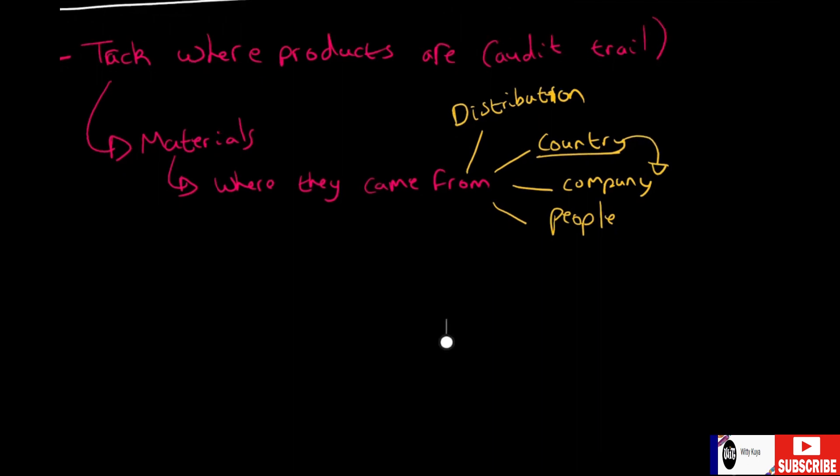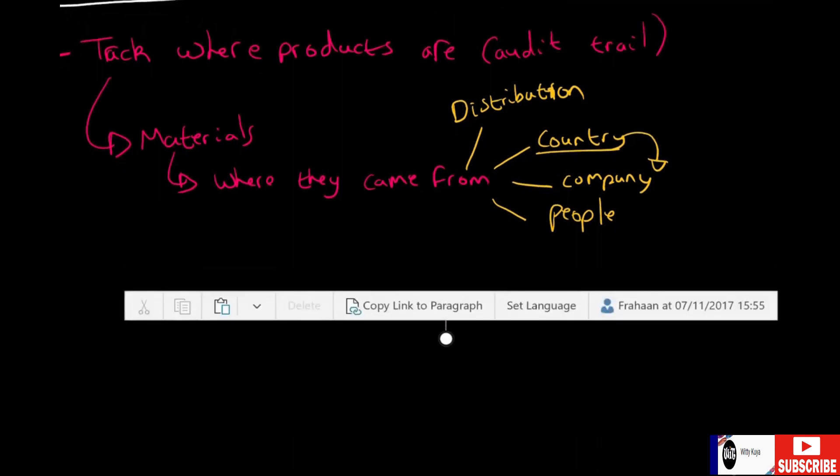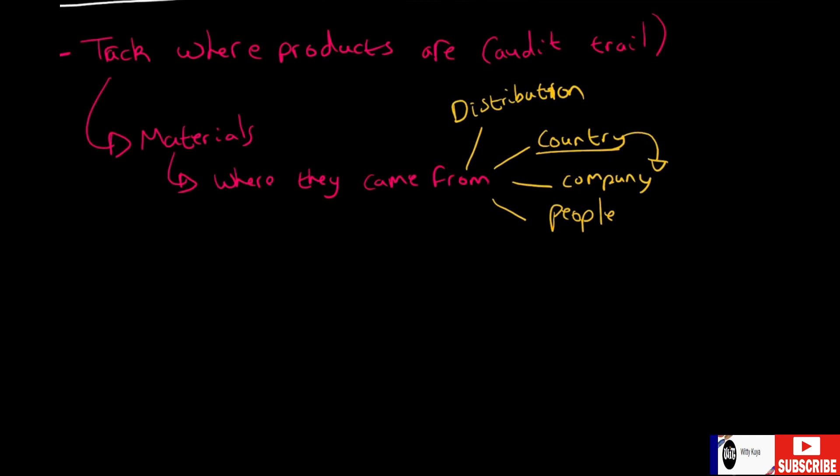You can also check where materials went before going into the product. Maybe the material was used in another product—I'm not saying that's a bad thing. Obviously, depending on the material and the product, that may not be an issue. But being able to truly know that the materials going into a drug, food item, or phone are original or brand new is valuable.